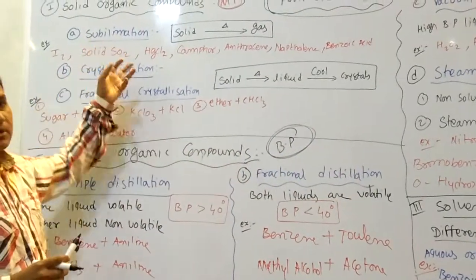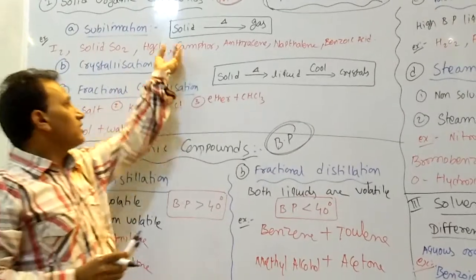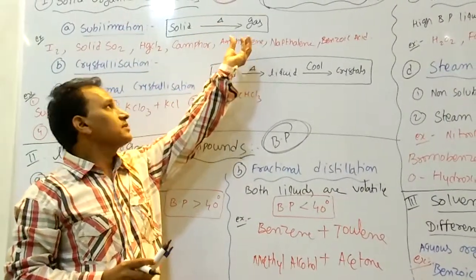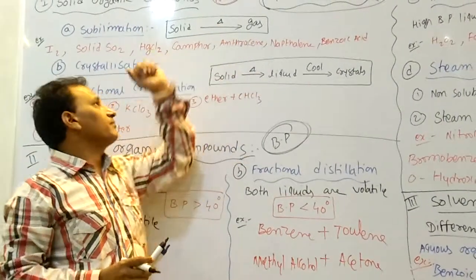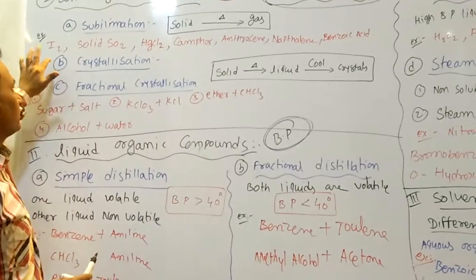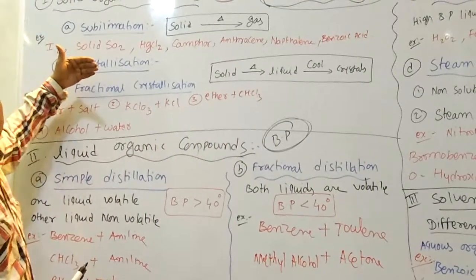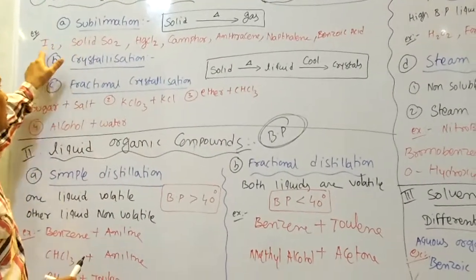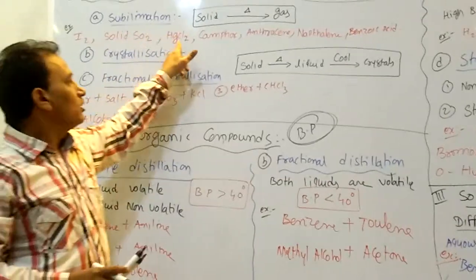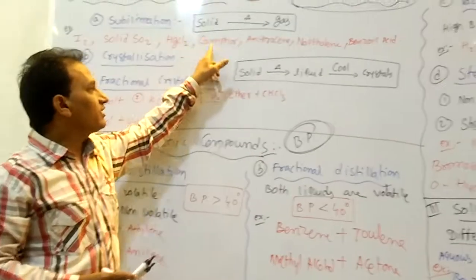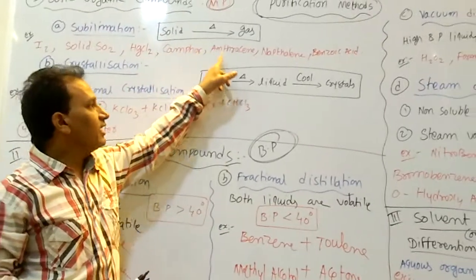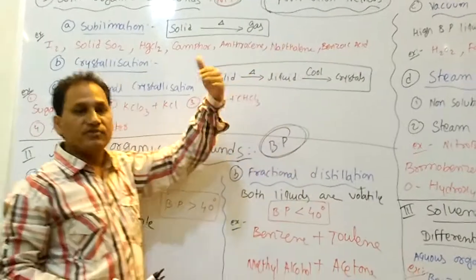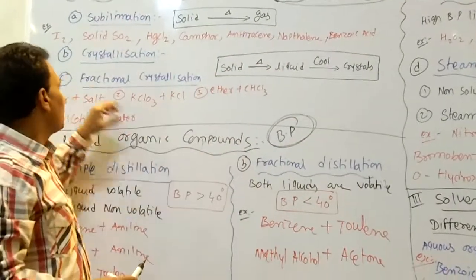In the sublimation method, the solid is directly converted into gas upon heating. Examples of substances purified by sublimation are: iodine, solid SO2, mercury chloride, camphor, anthracene, naphthalene, and benzoic acid.